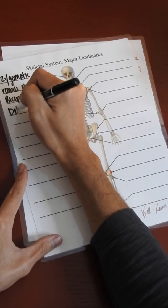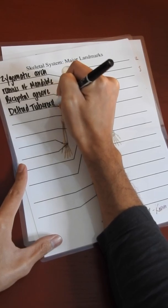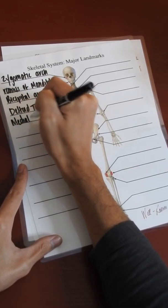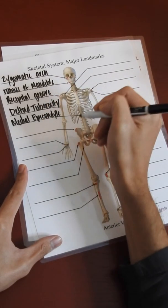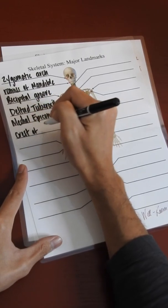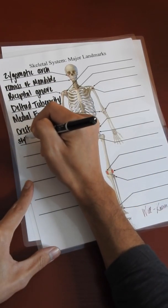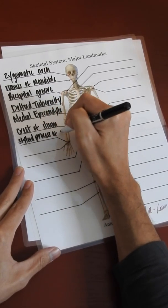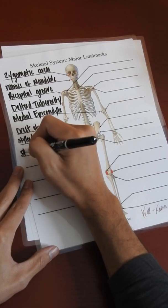The deltoid tuberosity, the medial epicondyle of the humerus, the crest of the ilium, the styloid process of the radius, and the styloid process of the ulna.